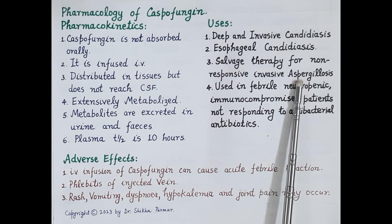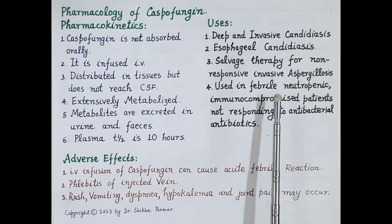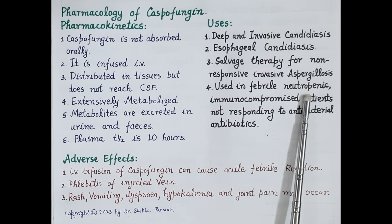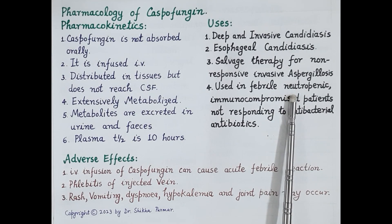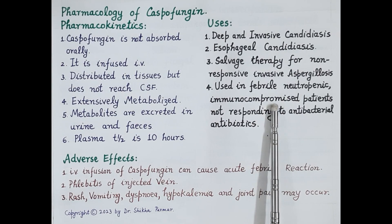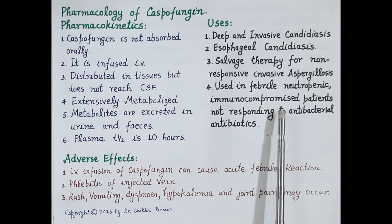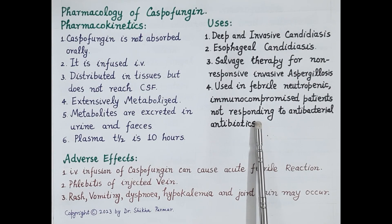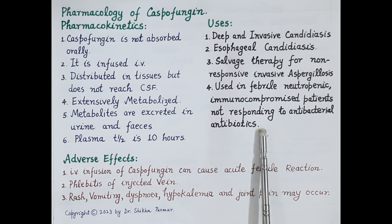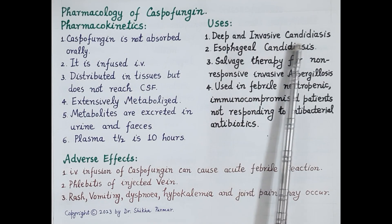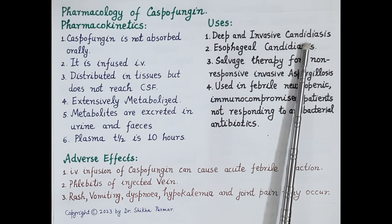Because of its good tolerability, caspofungin is increasingly used in the treatment of candidiasis in febrile neutropenic patients — those who are immunocompromised, have low immunity, and have a fever not responding to antibacterial antibiotics. The primary use of echinocandins is in the treatment of deep and invasive, or systemic, candidiasis.